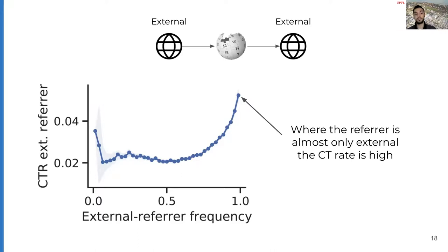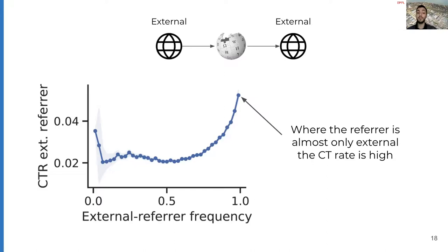For every page where we record a click, we can observe where the reader came from. In this plot, on the y-axis we have the click-through rate, and on the x-axis the frequency of external referrer — where one means that the totality of users who clicked the official link came from external websites, typically search engines. From the right part of the plot, we can see additional evidence of the stepping stone nature of some pages on Wikipedia: articles reached nearly exclusively from search are precisely those with the highest click-through rate. We manually inspected these and found that often these destination pages are not indexed or are downranked by search engines, indicating that Wikipedia fills a real gap in providing value for user navigation.